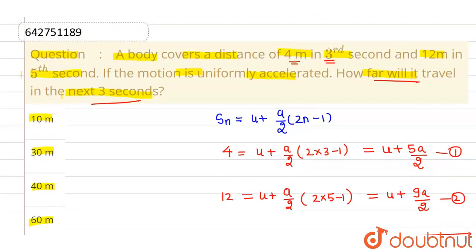So the distance traveled is 60 meters, which is given in option 4. Option 4 is correct and all other options are incorrect. I hope you understood.